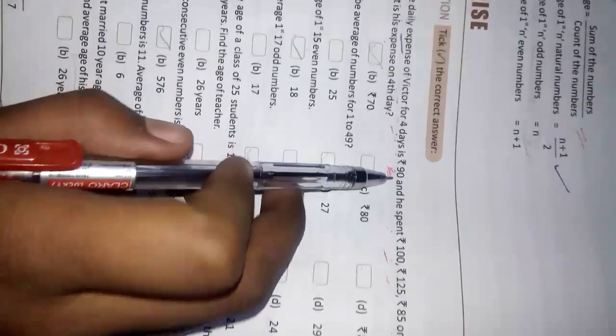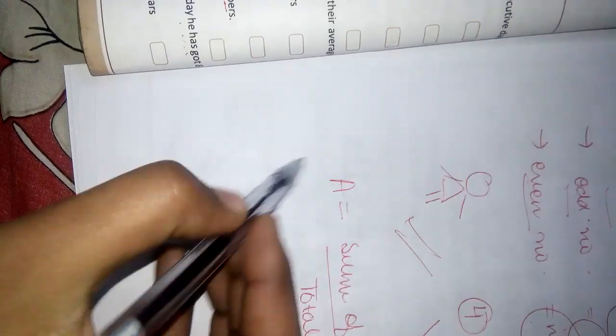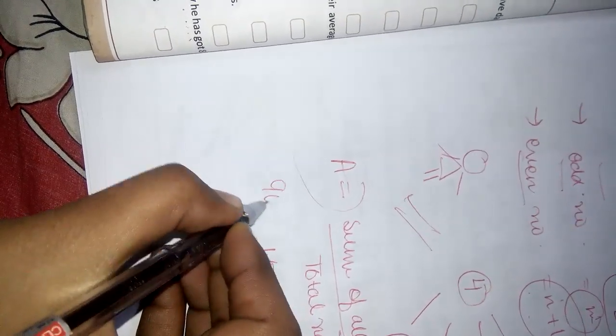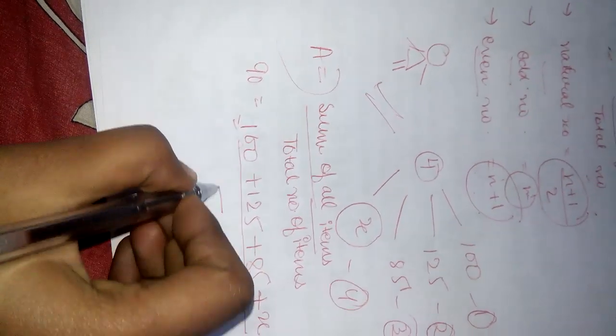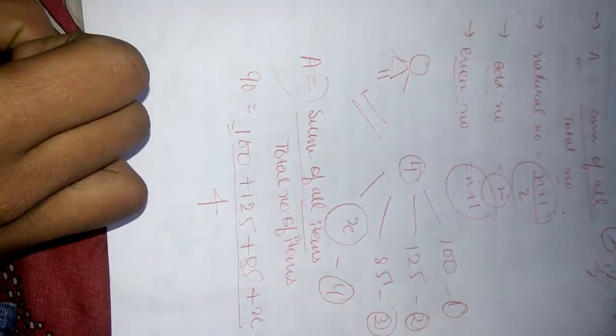And the question has given us that the 4-day average is 90. So I will write 90 here. Now, total number of items will be 1, 2, 3, 4. I am having 4 items, so I am using 4 over here.